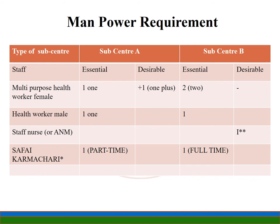Manpower requirements for the subcentre are as follows: Essential staff includes one female health worker (ANM) and one male health worker. Desirable additional staff includes a second ANM. For Type B subcentres, where the number of deliveries is more and infrastructure is better, two ANMs must essentially be available, along with one additional male health worker. A staff nurse or ANM is desirable, and a Class 4 employee may be a part-time worker at Type A and full-time at Type B subcentre.